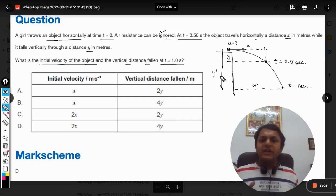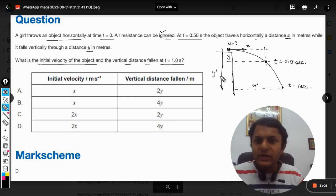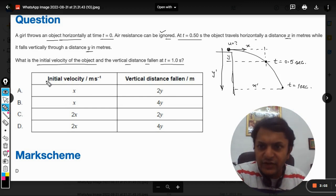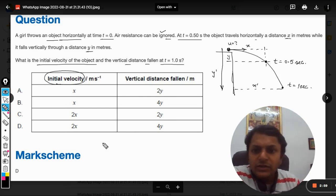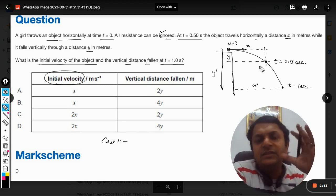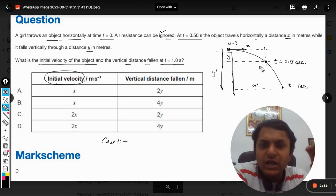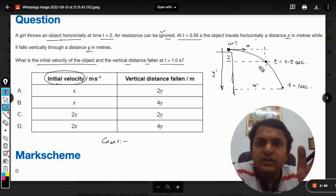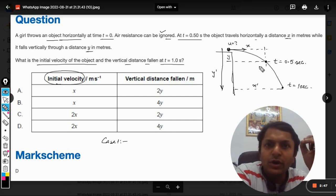Okay fine, so this is the statement of the question. We need to find the initial velocity. Let us concentrate on case number one. As we know, in this kind of projectile motion the horizontal velocity does not change because the acceleration is taking place only on the vertical axis.